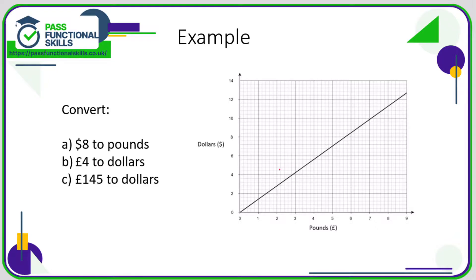Let's take a look at an example. Eight dollars to pounds. We've got dollars on the side, pounds along the bottom. Let's find eight dollars on the side which is here. Let's go across until it hits the graph.